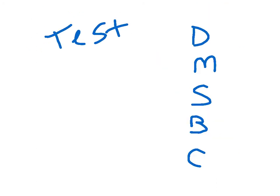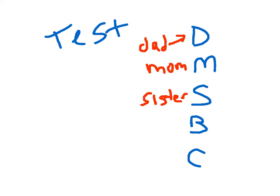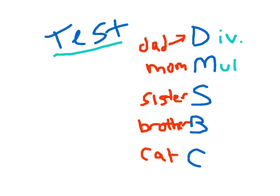Test time! Our division family stands for what? D stands for dad — divide. M stands for mom — multiply. S stands for sister — subtract. B stands for brother — bring down. And C stands for cat — check. These are the steps within the division process: first we divide, then we multiply, then we subtract, then we bring down — and then the cat says check.